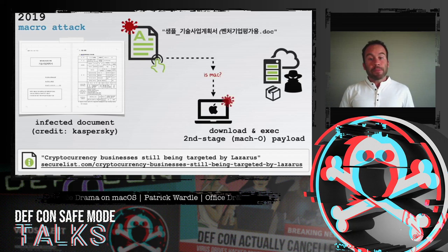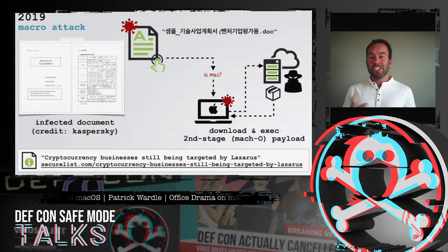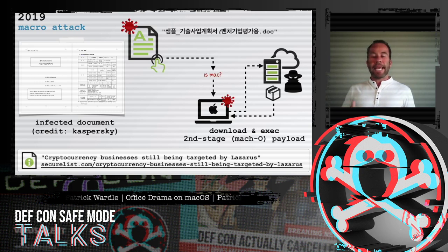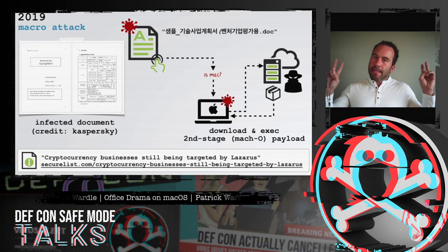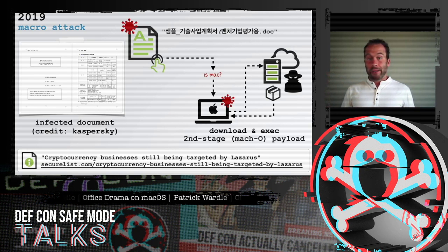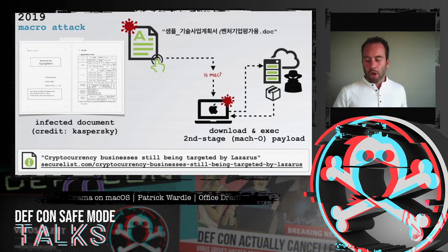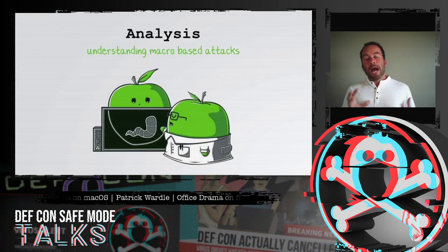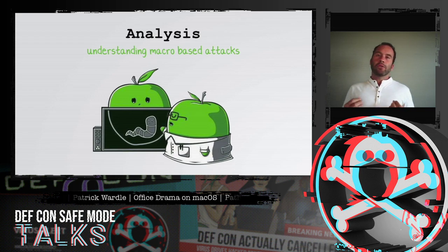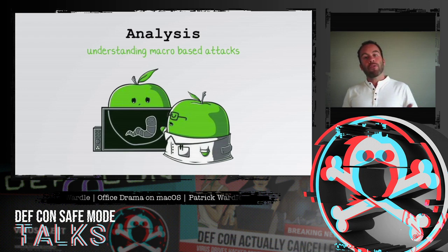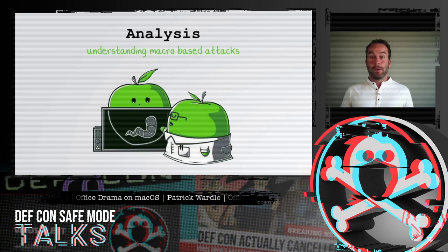Moving on to 2019, we have a document from the prolific Lazarus APT group, which is normally associated with North Korea. This is interesting because we're now seeing APT groups jump on the "let's target macOS via macros" bandwagon. Again, if the user opens the document and clicks allow, the system will be owned. Now let's talk about methods of analyzing these malicious documents, showing exactly how to extract embedded macros and how to analyze both the macro code and any embedded payloads.